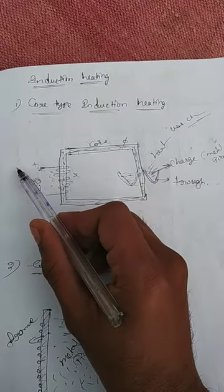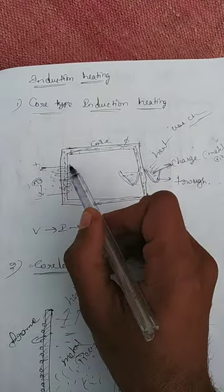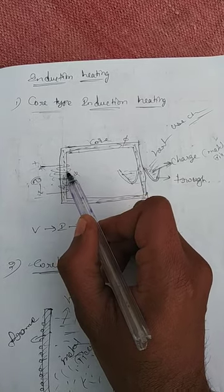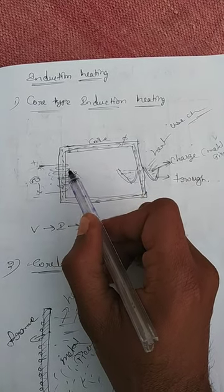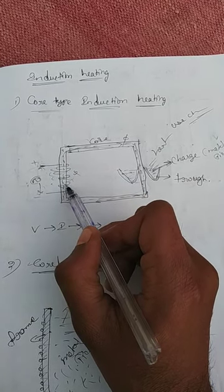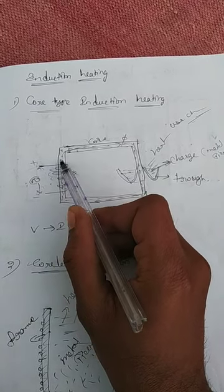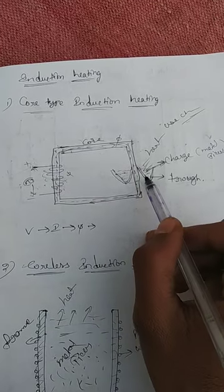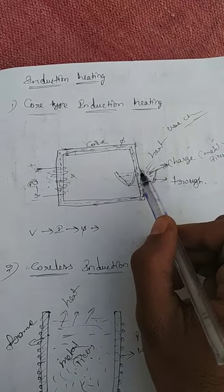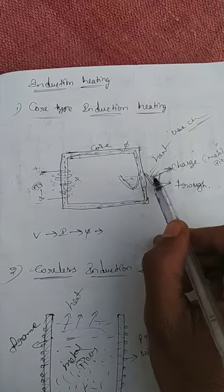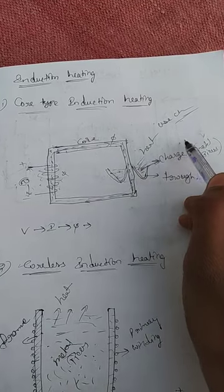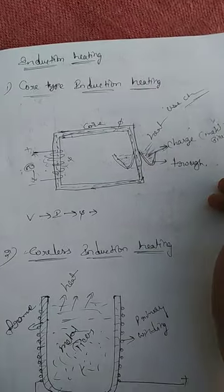When we turn on the switch, electricity passes through the coil, which generates heat. This heat is further passed by the frame to the charged particles and used for different purposes.